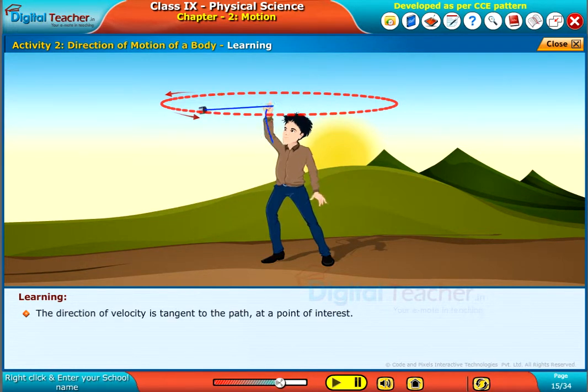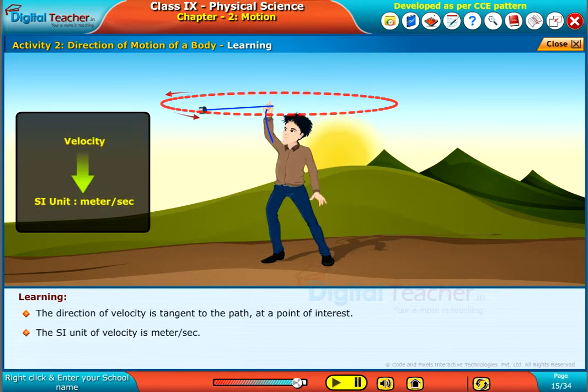The direction of velocity is tangent to the path at a point of interest. The SI unit of velocity is meter per second.